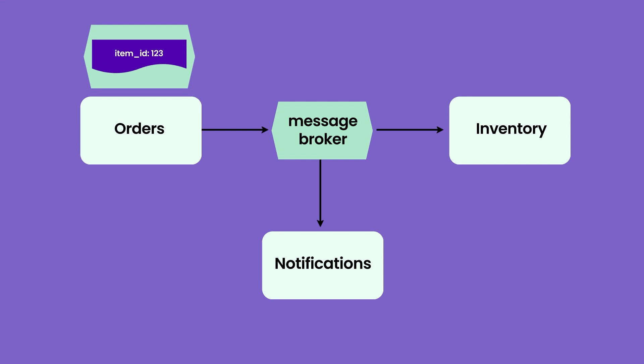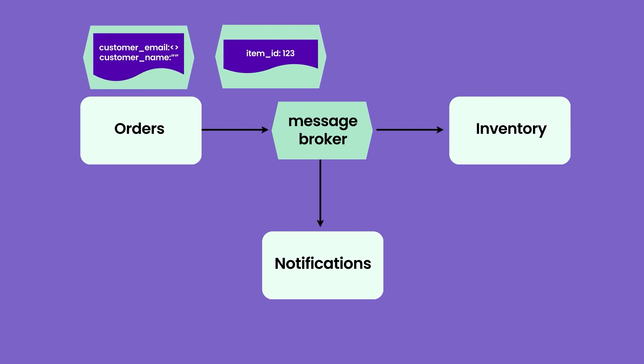If we are okay with sharing this data with the inventory service, we can use this approach. However, if there is a case where you are sharing data you might want to hide from one service but not another, or you don't want the event itself to be overloaded with data and want to send separate events, you can do that as well. You can send two events: one with item ID and another with customer email and address.